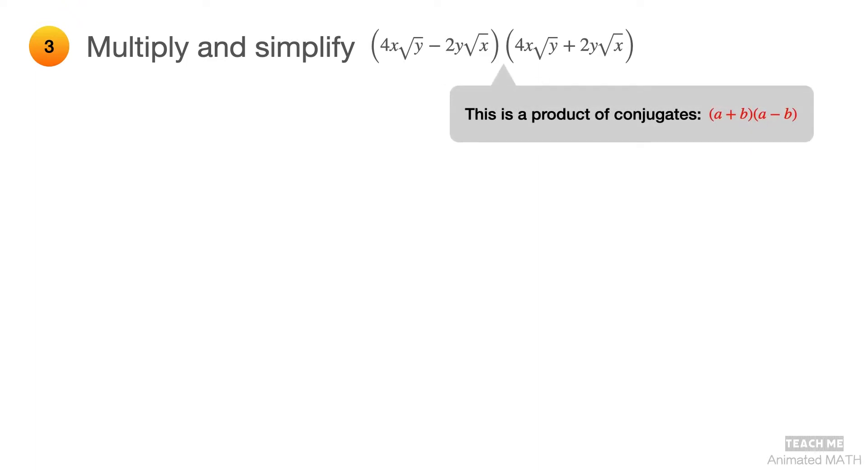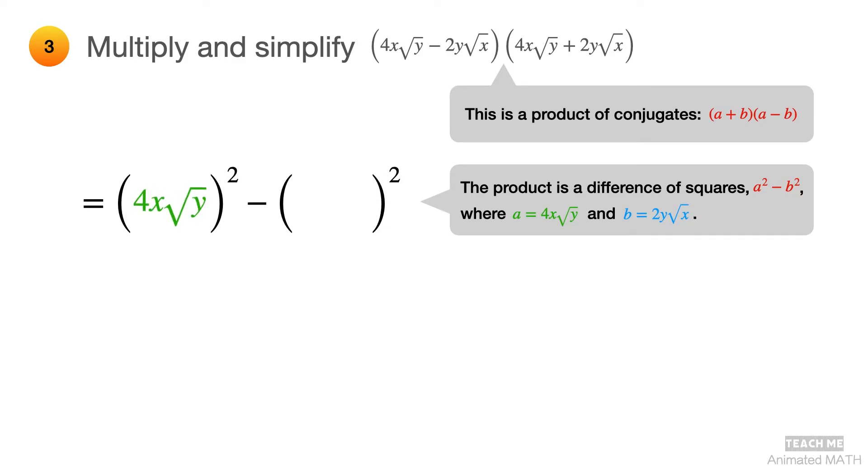This is a product of conjugates which follows the pattern a plus b times a minus b. The product is a difference of squares, which is a squared minus b squared. And in this case, a is equal to 4x square root of y, and b is equal to 2y square root of x. Simplify to get the final answer, which is 16x squared y minus 4xy squared.